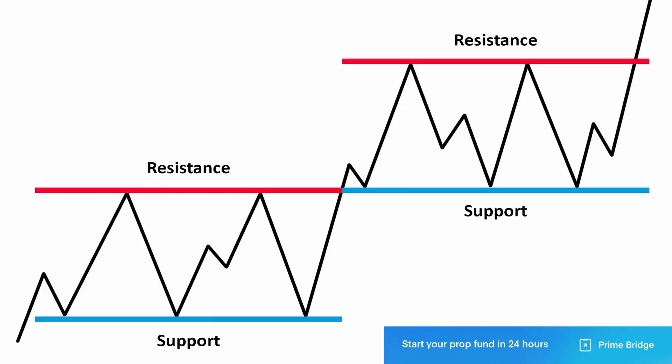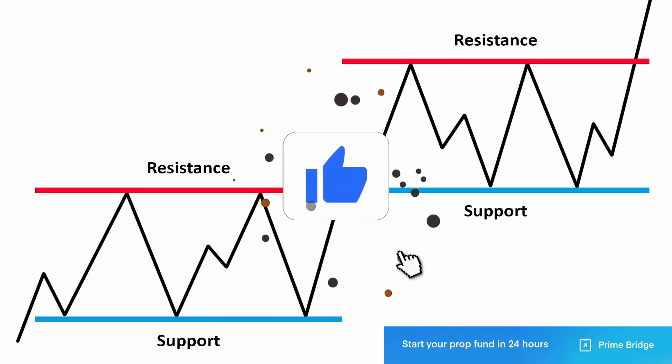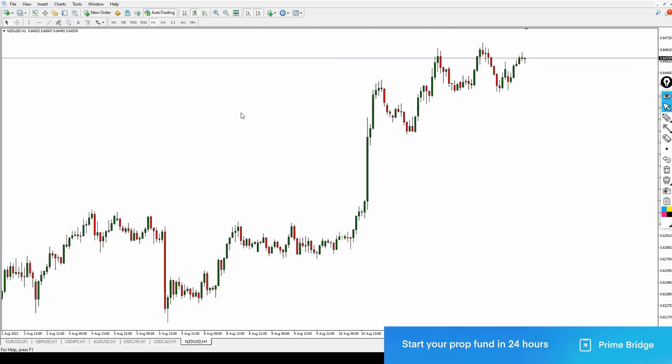Support level, on the other hand, is the level where sellers push the market to a particular limit and then couldn't push any further, and then buyers took over the market. That is how a support level is formed at that particular level.